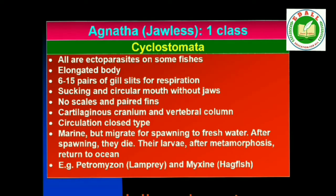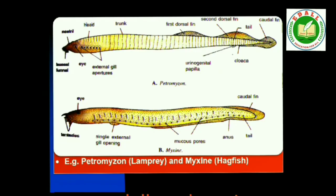Class Cyclostomata: All living members of the class Cyclostomata are ectoparasites on some fishes. They have an elongated body bearing 6–15 pairs of gill slits for respiration. Cyclostomes have a sucking and circular mouth without jaws. Their body is devoid of scales and paired fins. Cranium and vertebral column are cartilaginous. Circulation is of closed type. Cyclostomes are marine but migrate for spawning to fresh water. After spawning, within a few days, they die. Their larvae, after metamorphosis, return to the ocean. Examples: Petromyzon (lamprey) and Myxine (hagfish).